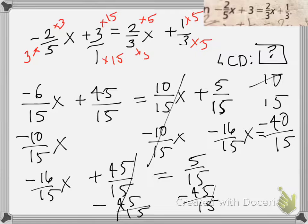Now that they're all 15s, the reason I wanted all 15s is because now they can go away—we can erase them. Now we only have negative 16 X equals negative 40. Then we divide both sides by negative 16, and you get X equals—negative divided by negative is positive.